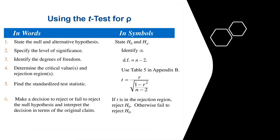When making a decision, you are going to use the t-test for the population correlation. Follow these six steps: state the null and alternative hypothesis; specify the level of significance; identify the degrees of freedom; determine the critical value and rejection region; find the standardized test statistic using the given formula; and then make a decision to reject or fail to reject the null hypothesis, and interpret the decision in terms of the original claim.